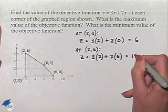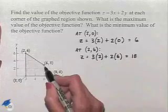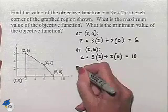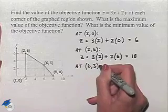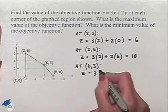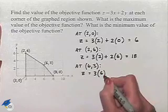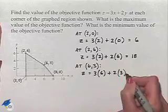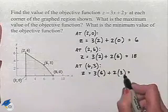Let's go now to the point whose coordinates are 6 comma 3. Substituting gives us z equals 3 times the x coordinate of 6 plus 2 times the y coordinate of 3. That's 18 plus 6 which is 24.